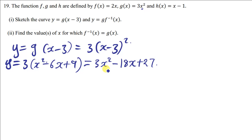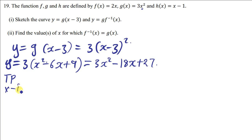Sketching the graphs of a quadratic equation is very simple. There are just about four important things you need: the turning point, the x-intercept, the y-intercept, and whether the parabola is going to face up or down. To tell whether it faces up or down, you check the value of a, which is the coefficient of x squared.